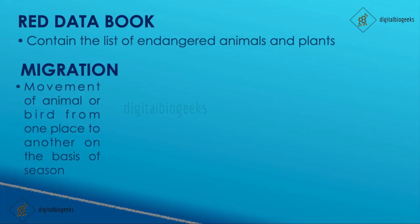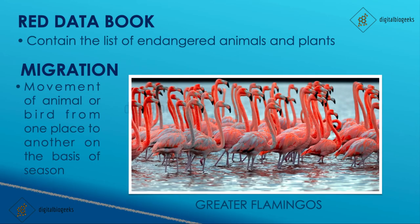Migration is the movement of an animal or a bird from one place to another based on seasons. We are familiar with migratory birds — greater flamingos, for example, migrate to India. These birds fly to faraway areas every year at a particular time due to climate change. They fly to lay eggs because the climate in their original habitat has become very cold or very hot. When the climate of their natural habitat becomes suitable again, they fly back.